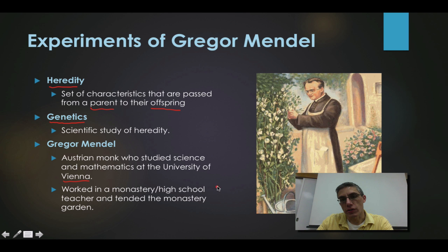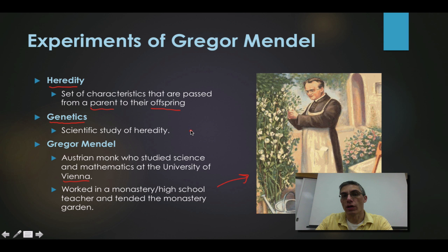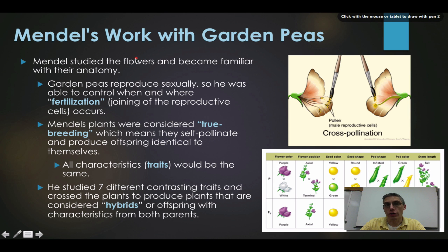In this garden — you can see it over on the right-hand side — he spent his time raising garden peas. Those garden peas are really significant because the information he gained from his studies with those garden peas helped to establish many of the principles that we know about genetics today. Mendel was making careful studies of the passing of genetic traits from generation to generation with his garden peas.